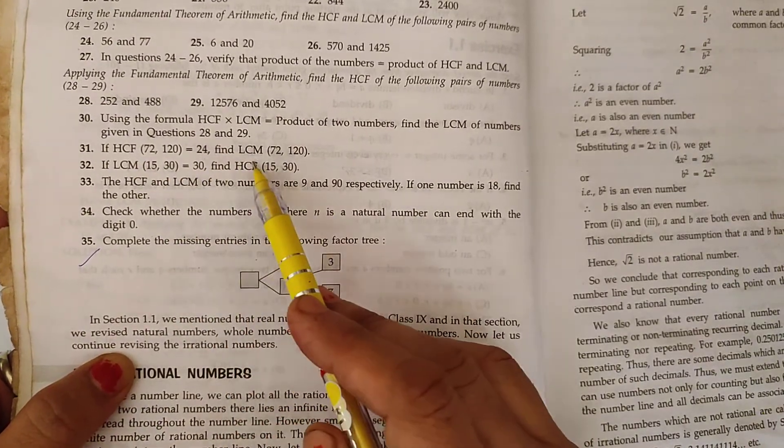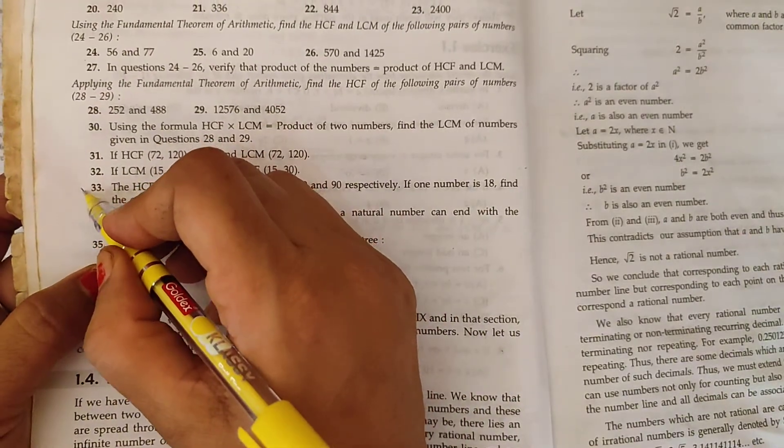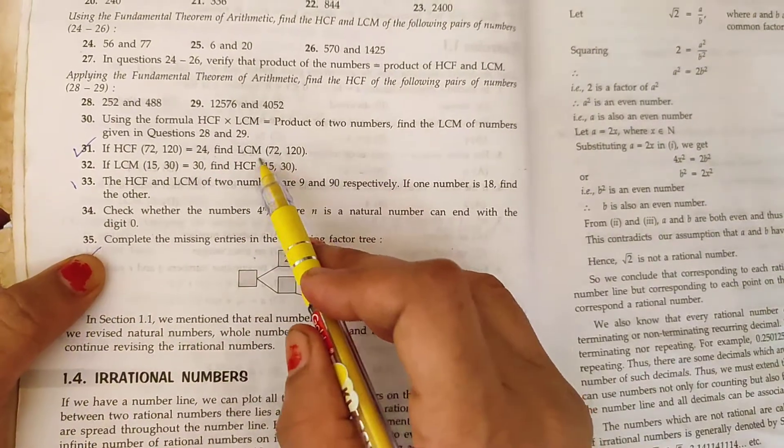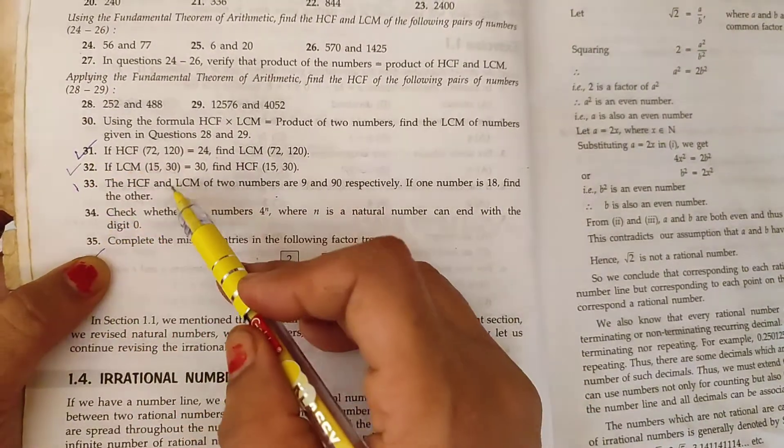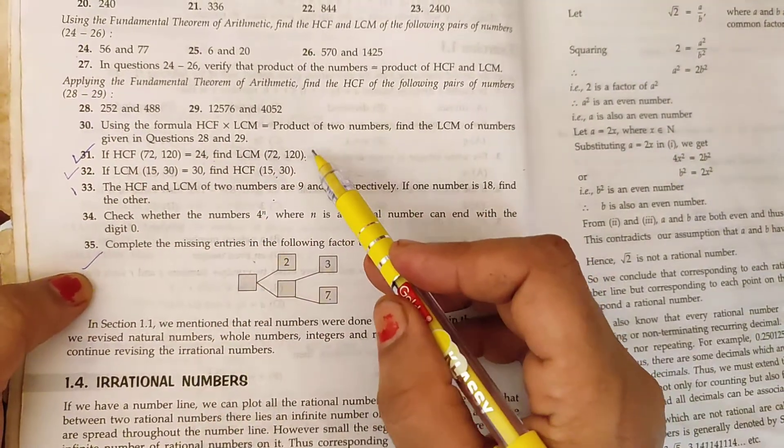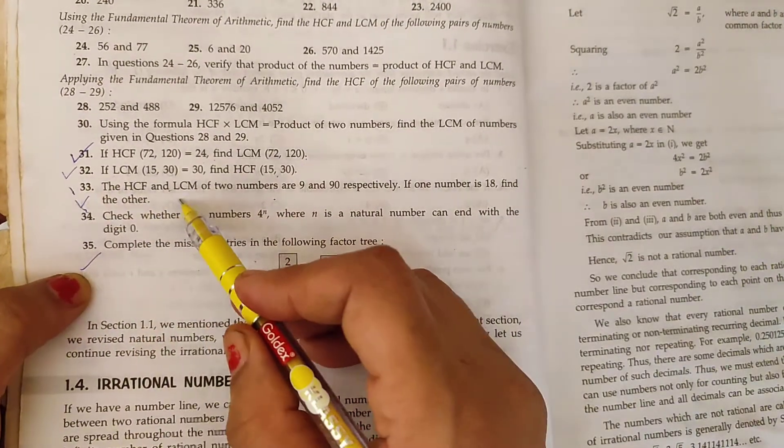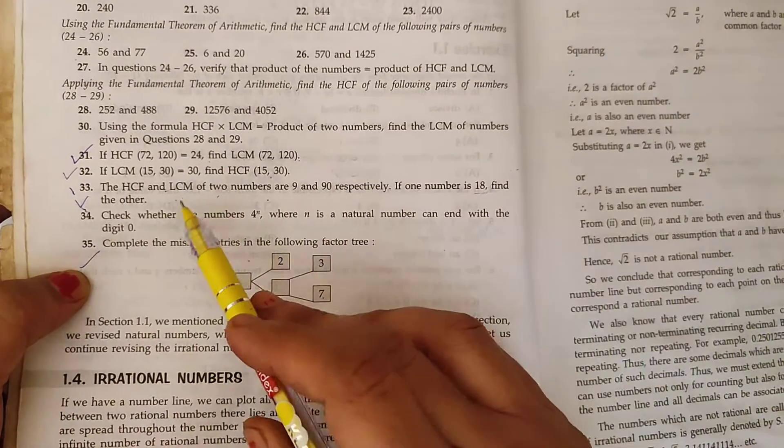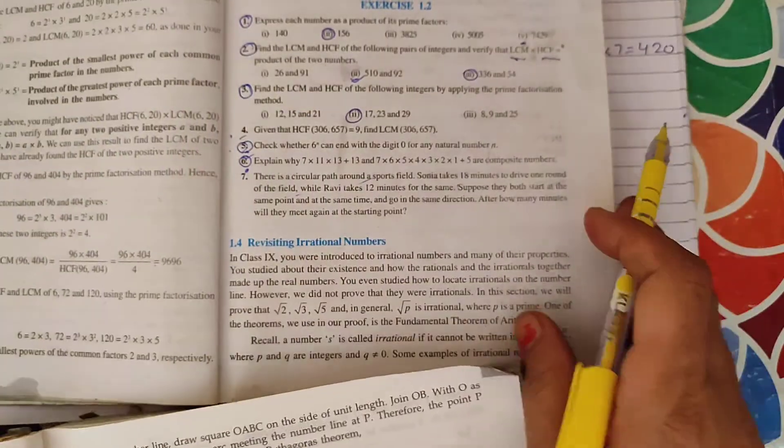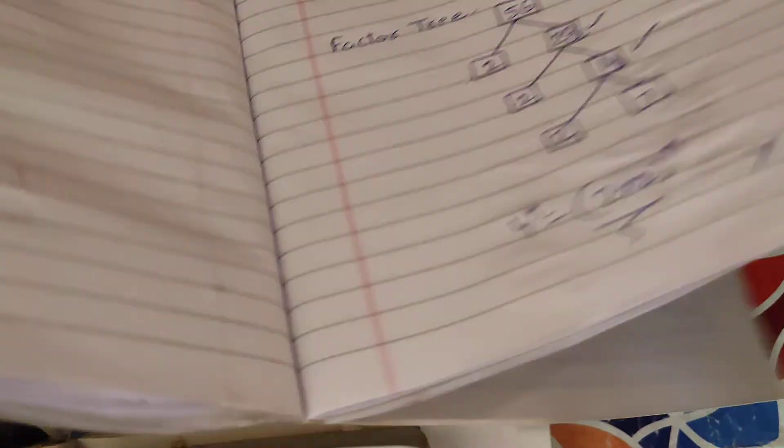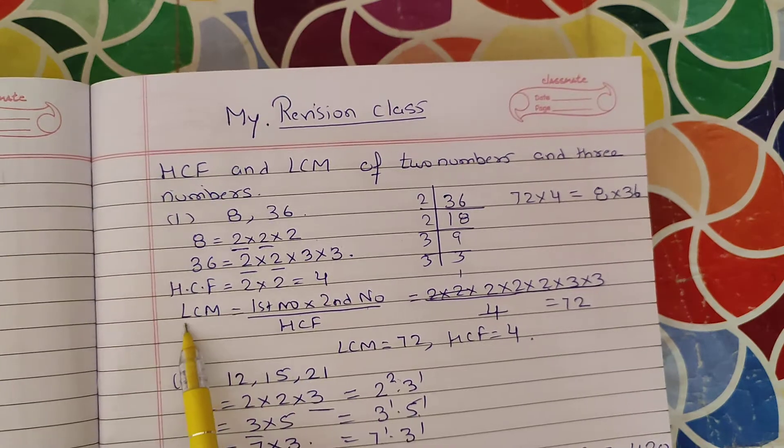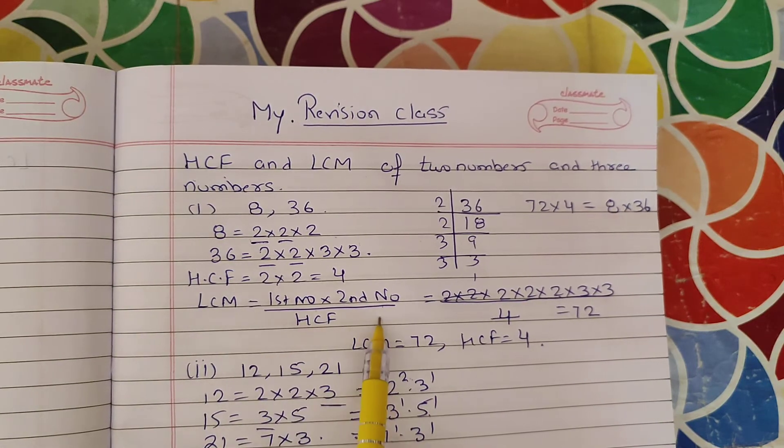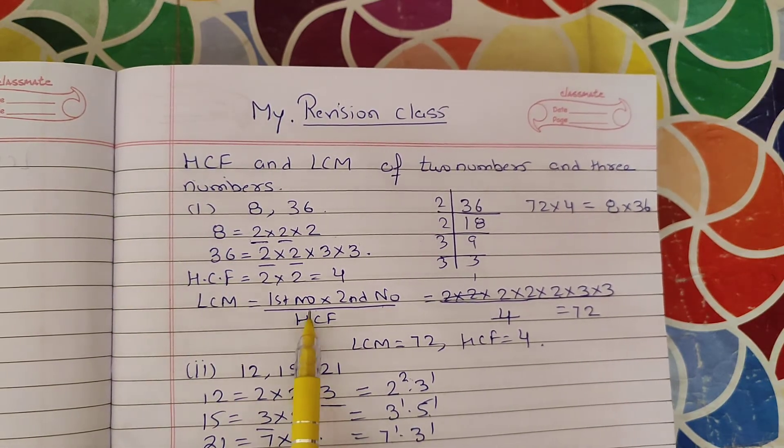Students, I have three important questions. If HCF of 72 and 120 is equal to 24, find the LCM. Next, LCM is given, we are going to get HCF. Then question 33: if HCF and LCM are 9 and 90 respectively, if one number is 80, find the other number. These three questions students will be given in this concept. Here you can see this concept: LCM into HCF is equal to 1st number into 2nd number. These four things will be missing. So you can use this concept.